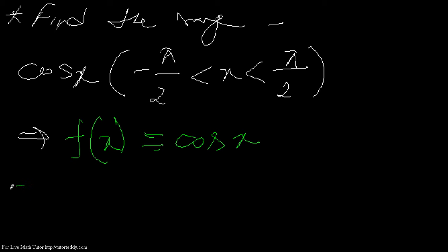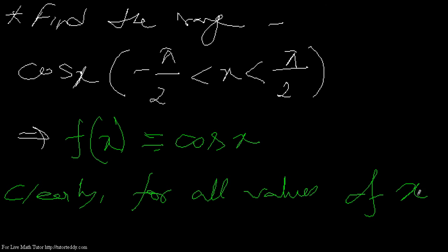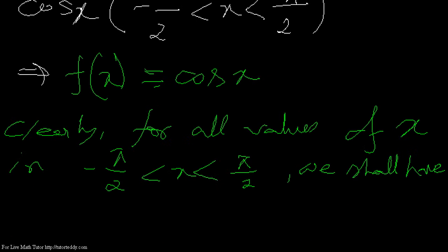So let me write this here. Clearly for all values of x in minus pi by 2 less than x less than pi by 2, we shall have 0 less than cosx less than 1.